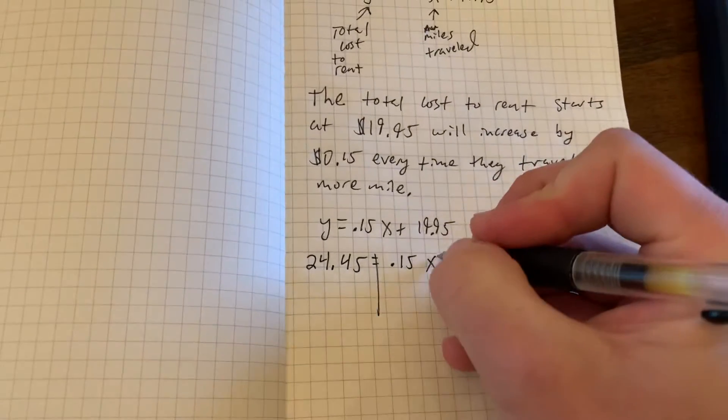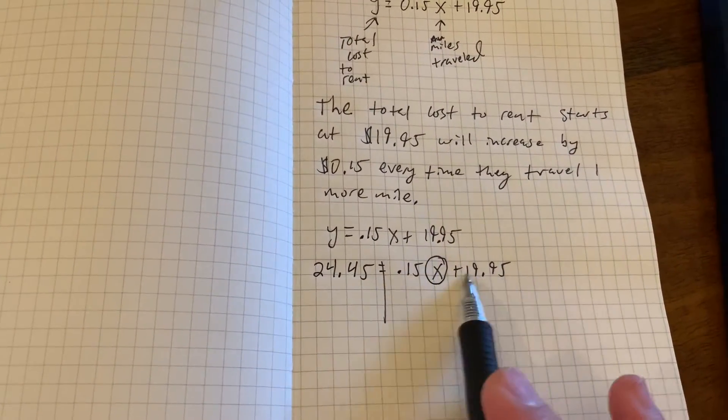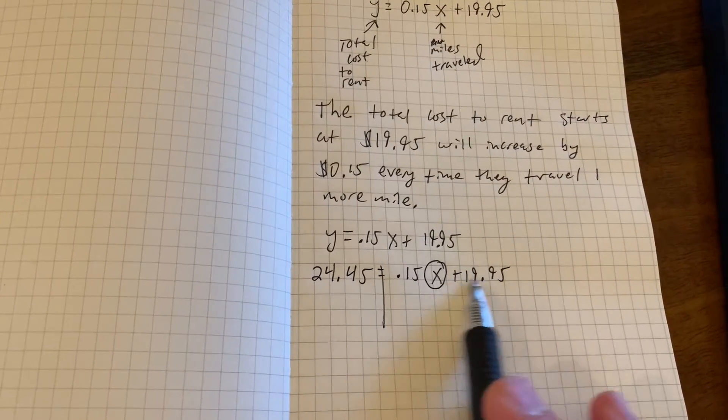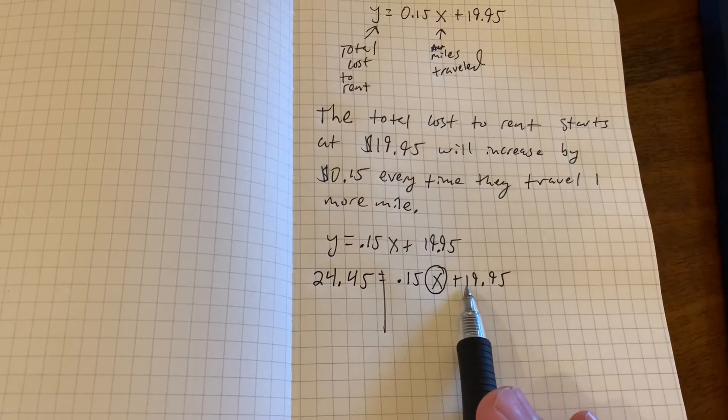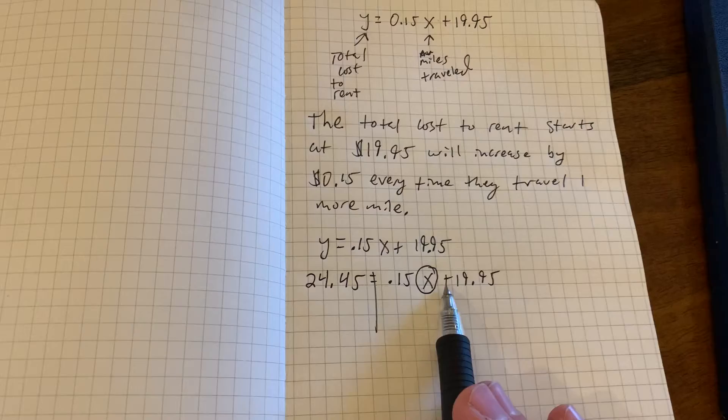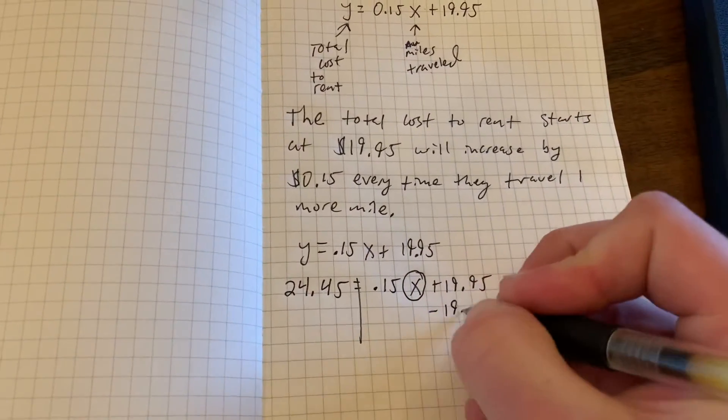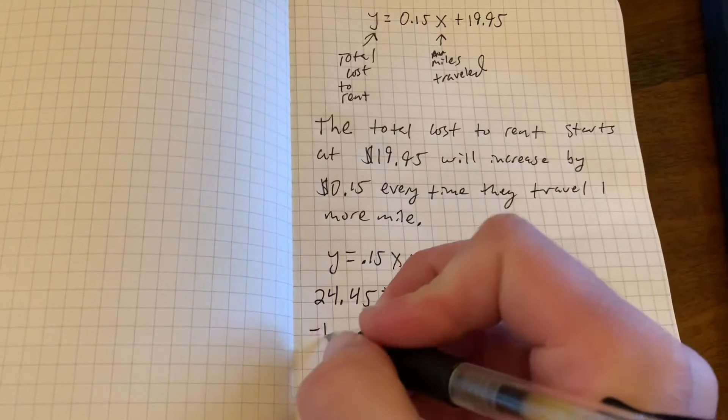In order to solve for X, we need to get rid of the close number and the far away number. We're going to get rid of the far away number to start, always using our opposites. So the opposite of adding $19.95 is subtracting $19.95 from both sides.